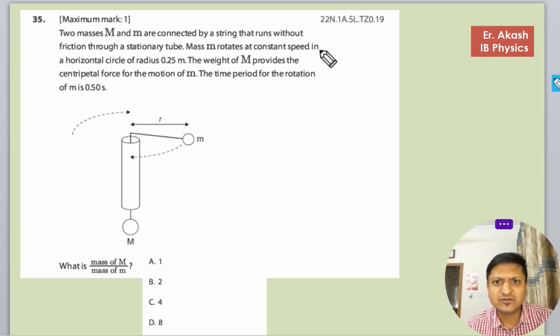Mass M rotates at constant speed in a horizontal circle with radius 0.25 meters, and the weight of M provides the centripetal force to the m. So weight is providing the centripetal force.